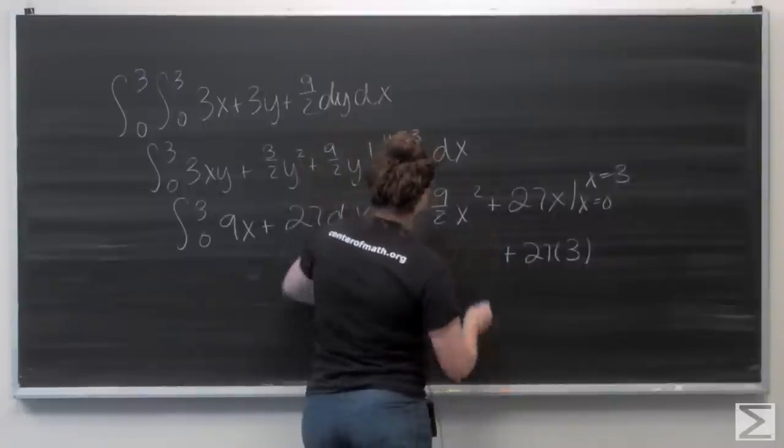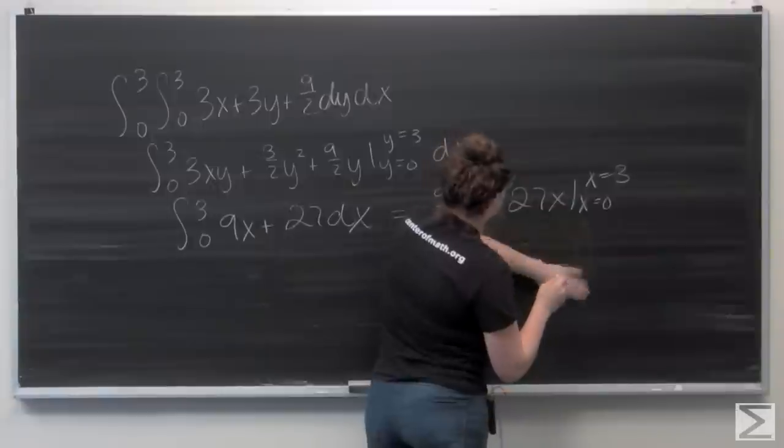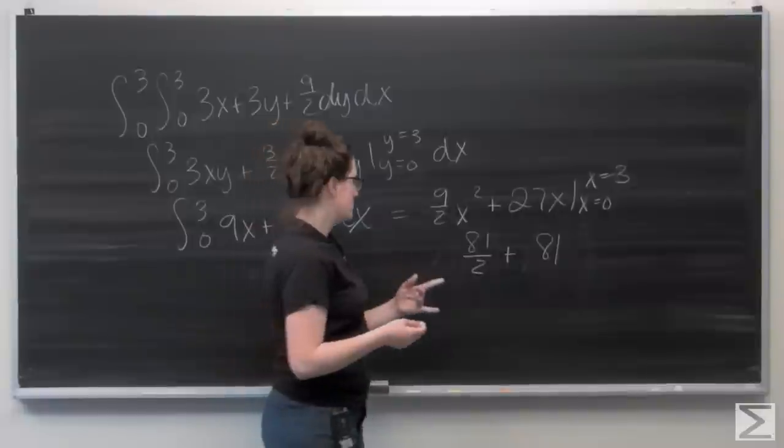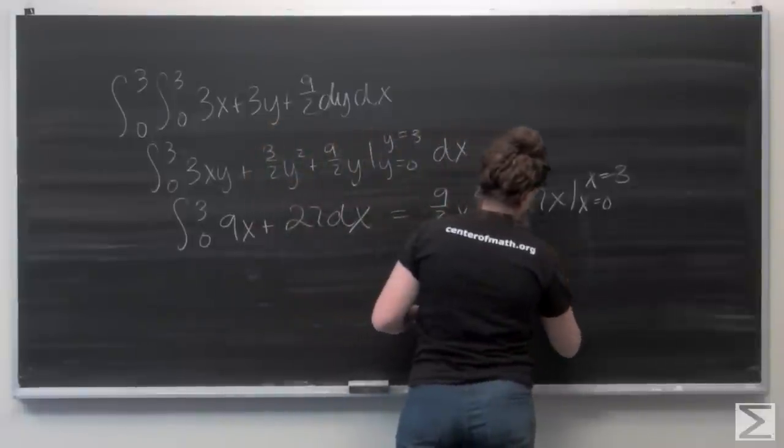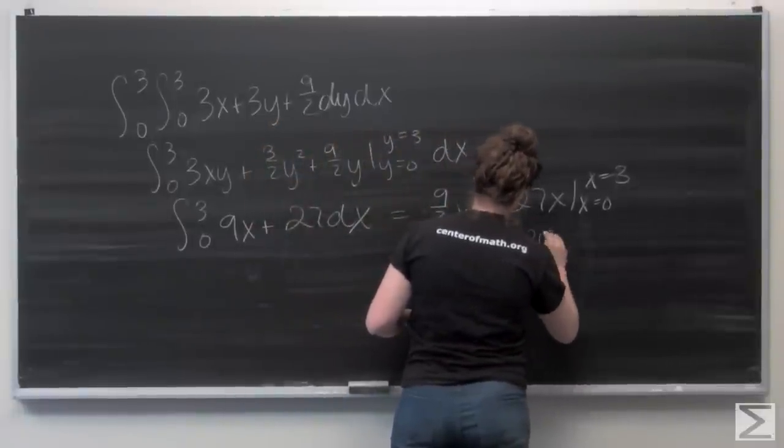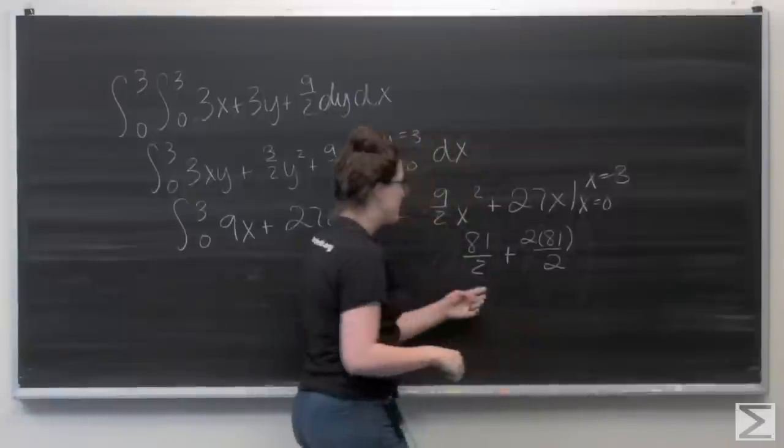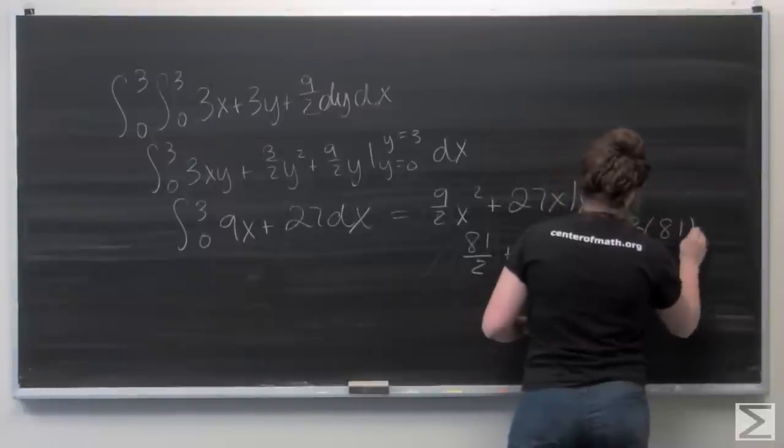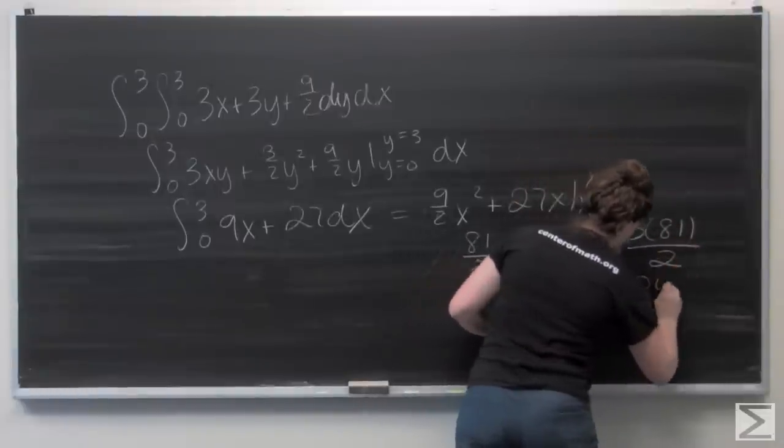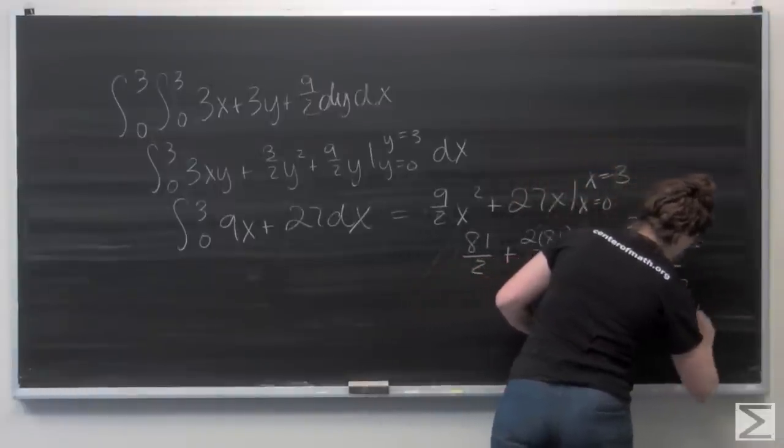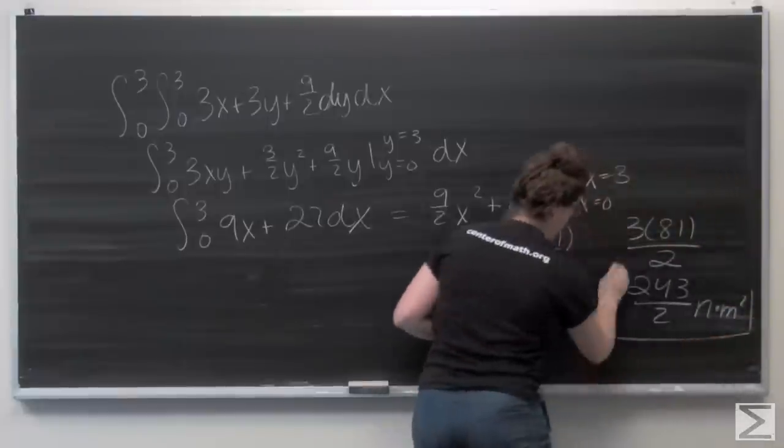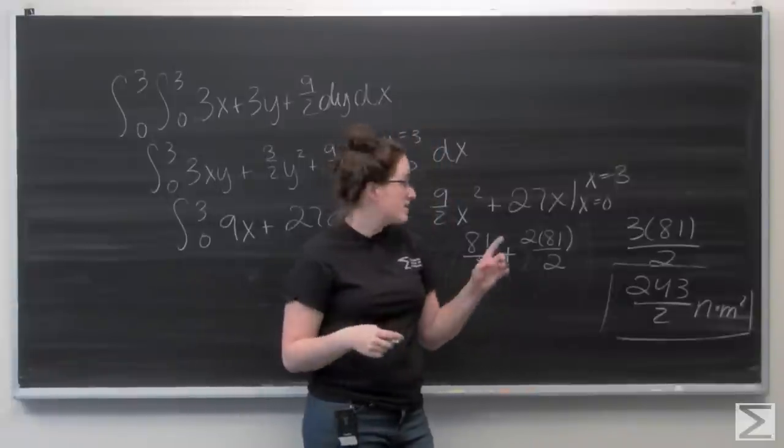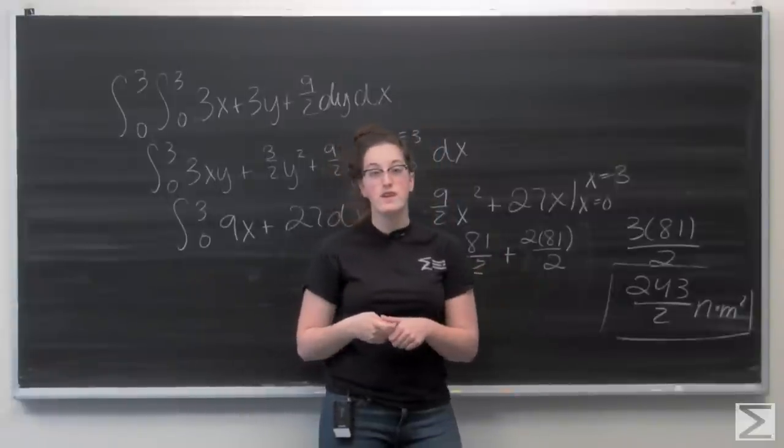So I want to add these up. I've got 81 halves plus 81. So that's like 81 halves plus 2 times 81 halves, 3 times 81 over 2. That gives me 243 halves Newton meters squared, and that's going to be the flux of F through that given surface area.